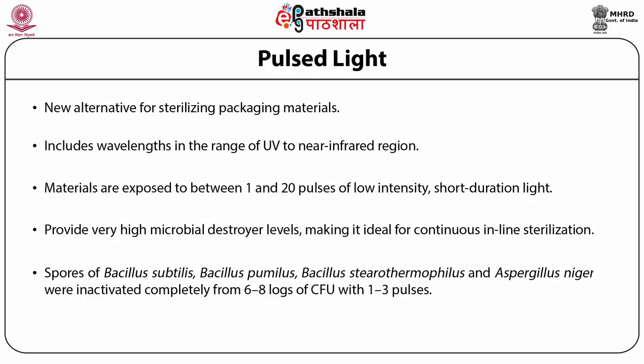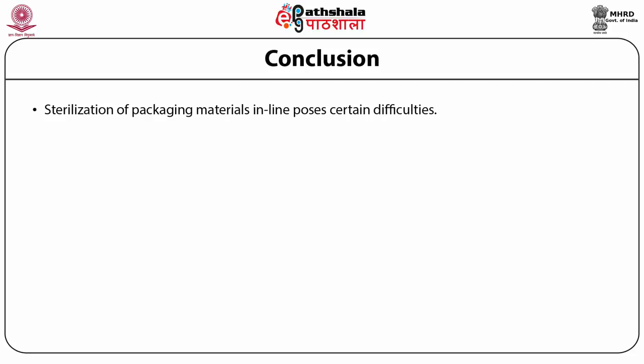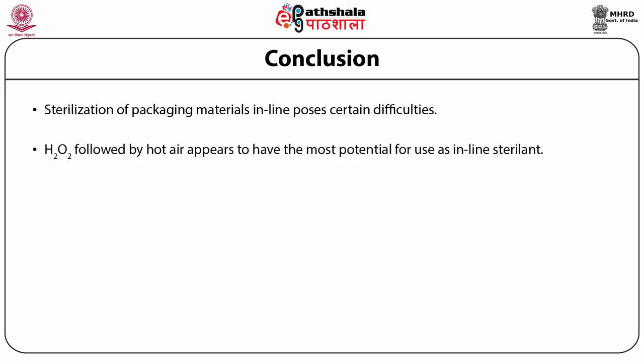Package geometry should not allow any shadowing on the product, or the light exposure may not be sufficient. Sterilization of packaging materials in-line presents certain difficulties. Based on the topics covered, hydrogen peroxide sterilization followed by hot air appears to have the most potential for use as an in-line sterilant for packaging materials and food contact surfaces. This combination is time-tested and no adverse reports have put any suspicion over the method's acceptability.